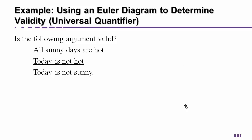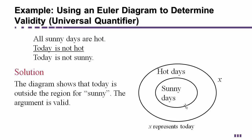Let's look at another one. All sunny days are hot again with the universal quantifier of all. Today is not hot so therefore today is not sunny. Draw the picture.